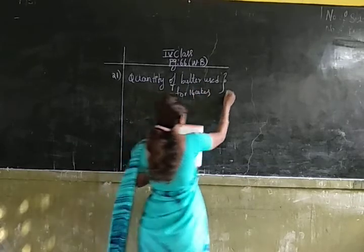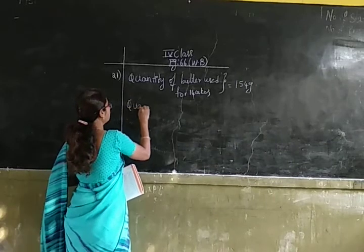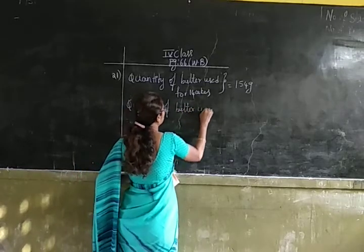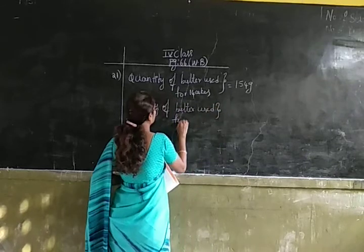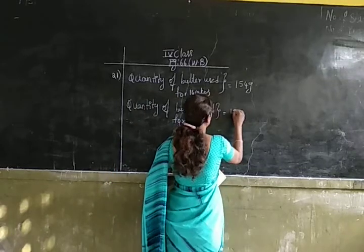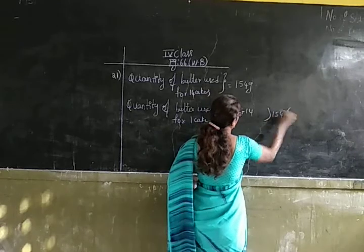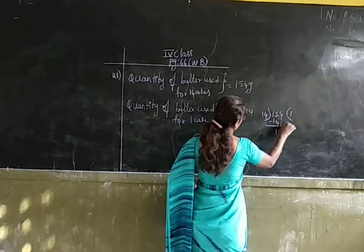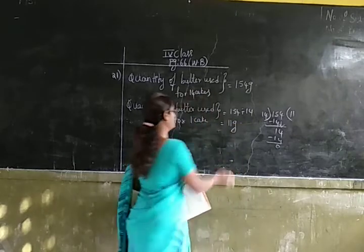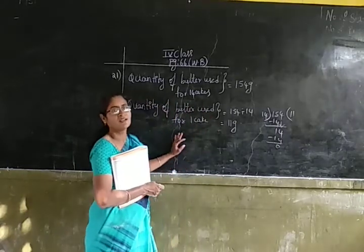Quantity of butter used for 14 cakes is 154 grams. Now we have to find out the quantity of butter used for 1 cake. For that we use the operation division. 154 divided by 14: 14 ones are 14, bring down 4, 14 ones are 14. So 11 grams of butter is used for making 1 cake.